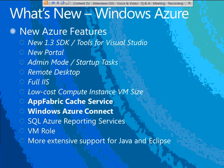This is part two of the three-part series. In part one, we looked at the new 1.3 SDK, a new Silverlight-based portal, features such as admin mode and startup tasks, the remote desktop feature, full IIS — which opens up more scenarios for hosting websites — and a new fifth VM size called the extra-small size. Today we're looking at the AppFabric Cache service and Windows Azure Connect. In part three, we will look at SQL Azure Reporting Services and the VM role feature.